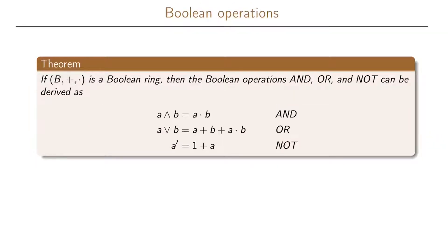Here is our first link between a Boolean ring and a Boolean algebra. If B with the operations addition and multiplication is a Boolean ring, then the Boolean algebra operations AND, OR, and NOT can be derived as: A AND B equals A times B, A OR B equals A plus B plus A times B, and NOT A equals 1 plus A.